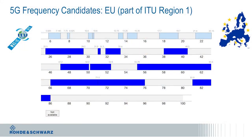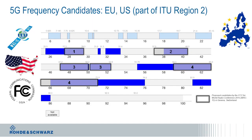First, the slide shows the frequency candidates proposed by Europe, which represents ITU Region 1. Here is an overlay with the proposal by the Federal Communications Commission, the FCC, the regulator in the United States. As you can see, there is some overlap with the European proposal.